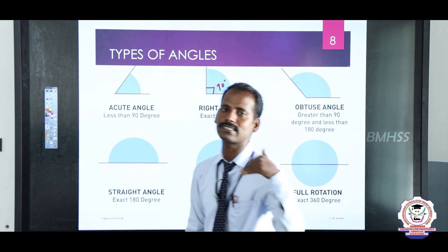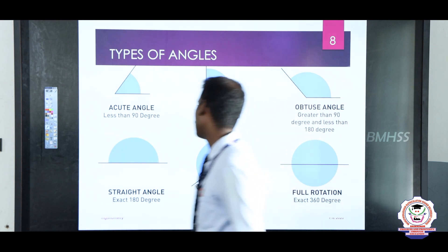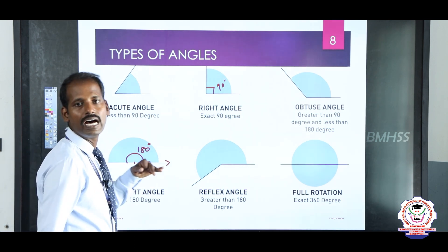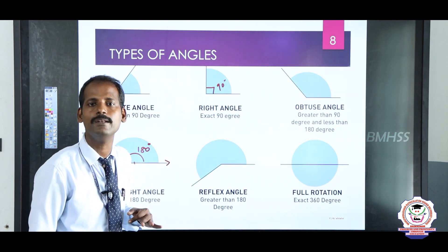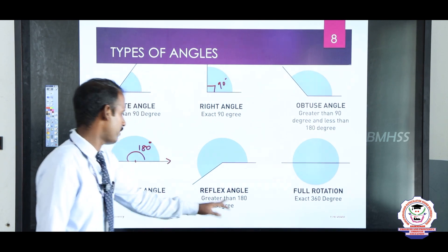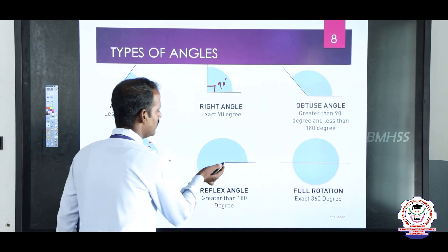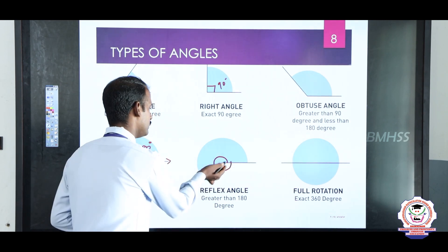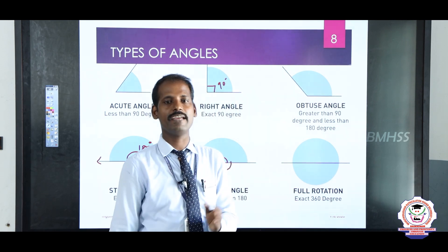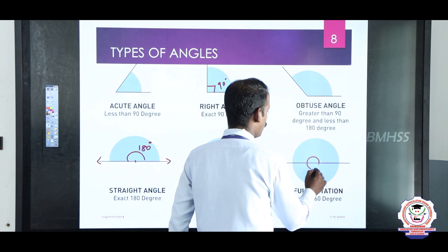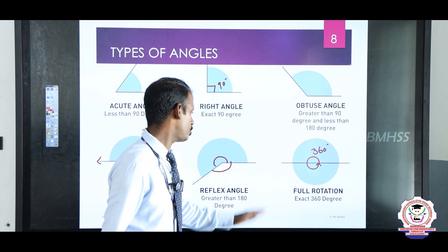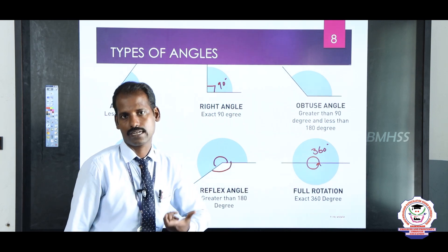Next one: straight angle. Exactly 180 degrees is called a straight angle. Here this is the center point — 180 degrees — this is called a straight angle. And then next: reflex angle. What is a reflex angle? It is nothing but greater than 180 and less than 360 — it is called a reflex angle. Next: full rotation, also called complete angle. Complete angle means full rotation — that is 360 degrees. Exactly 360 degrees is called a complete angle or full rotation.